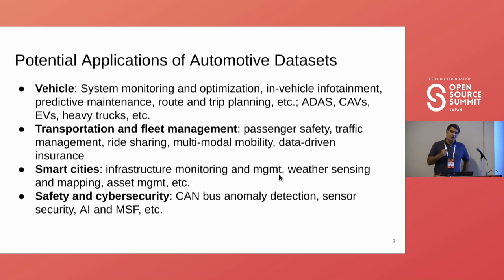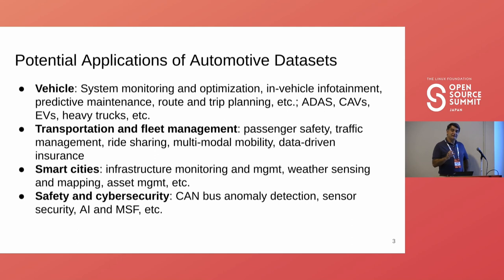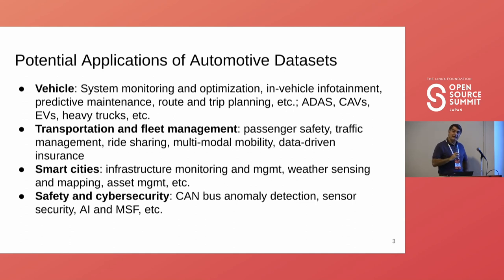Potential applications span many different areas. For vehicle applications, you can use this data to do system monitoring and optimization in a car. You can collect data from in-vehicle infotainment, and you can do predictive maintenance — a lot of companies already do that. They collect data from your car and might send you an email saying your battery is about to die, or your engine is having a problem, and you should make an appointment with a repair shop.